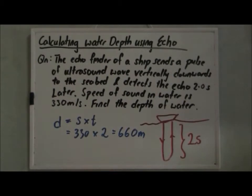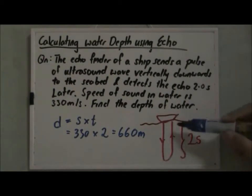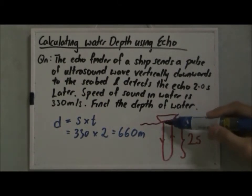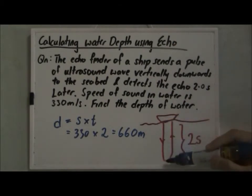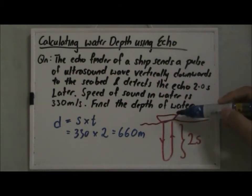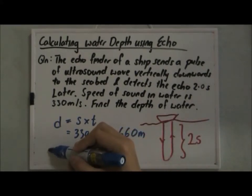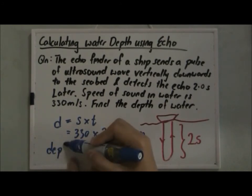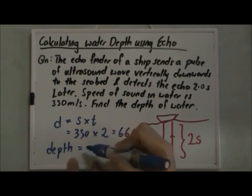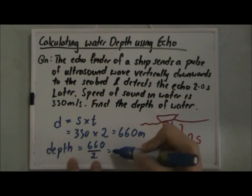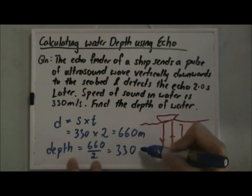A lot of students will stop here and think that 660 meters is the answer, but it's not. If you look at the diagram, 660 meters is actually the total distance for the wave to go to the bottom and then reflect back up. So the depth is actually half of this distance. To find the depth, it's equal to 660 divided by 2, which gives us 330 meters.